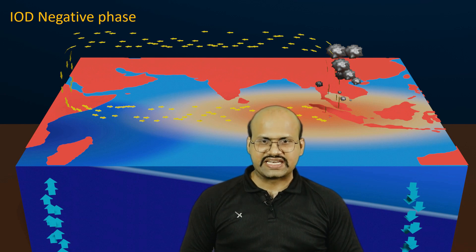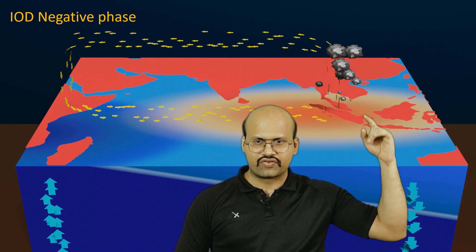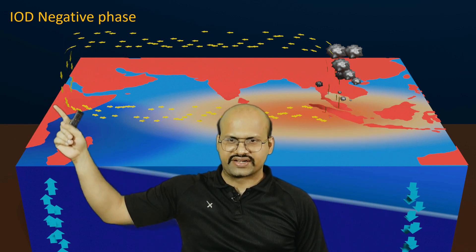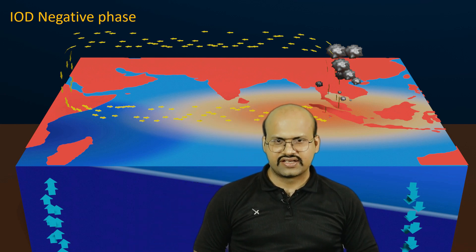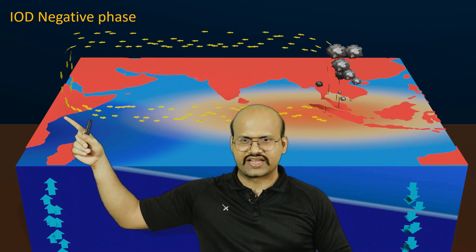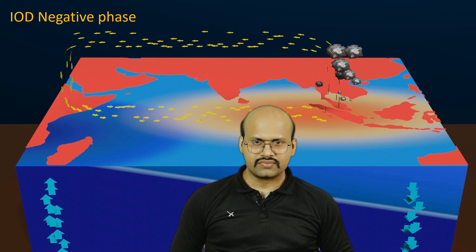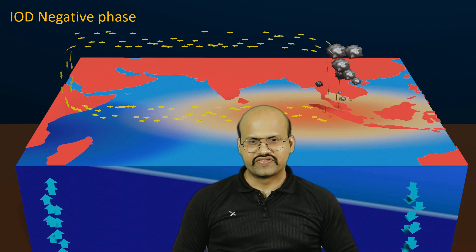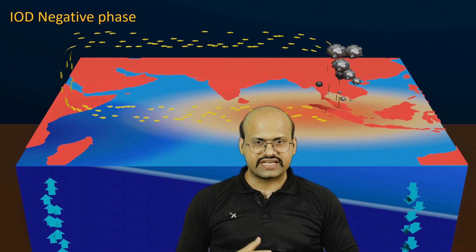So in the negative IOD phase, there is rainfall in the eastern region including northern Australia, while over the African region the air is descending and therefore getting adiabatically heated, bringing no rainfall to Africa. In the later part of the video we will see how this negative phase of IOD affects Indian monsoon.